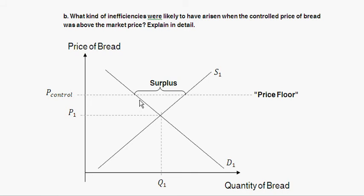Lastly, because the government can't perfectly enforce prices, this price control creates an incentive for a black market. Suppliers with surplus bread — rather than letting it rot — may sell it illegally. This black market is inefficient by definition and can have unintended consequences like allowing criminal activity to flourish more than it would without the price control.